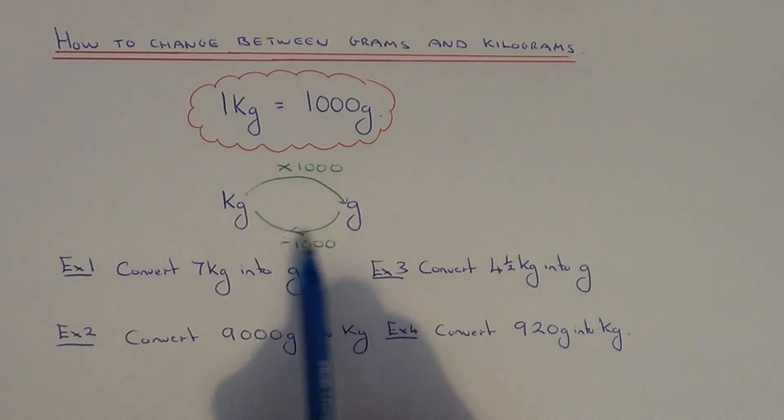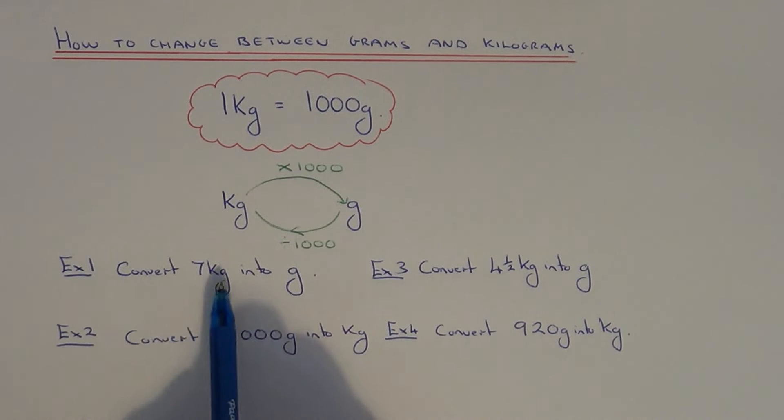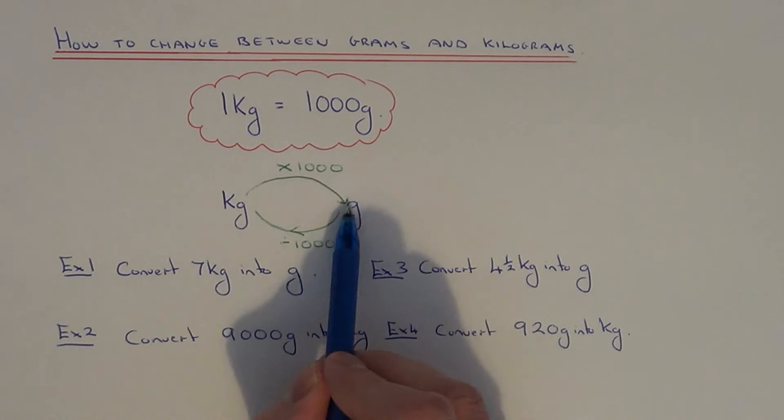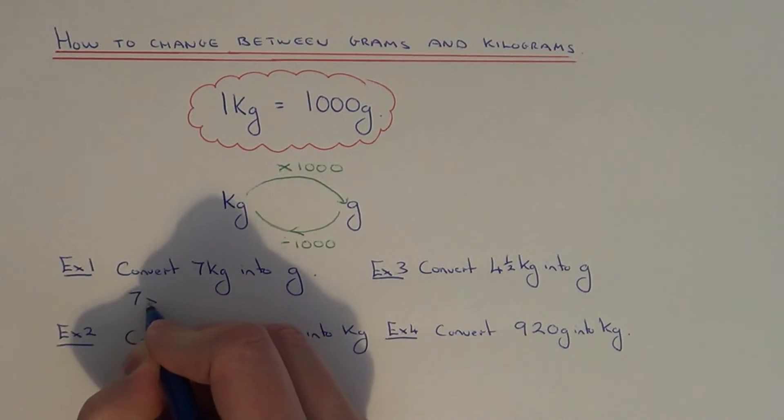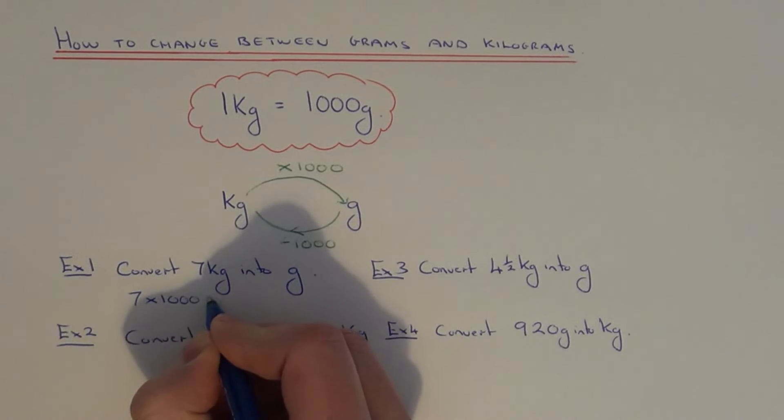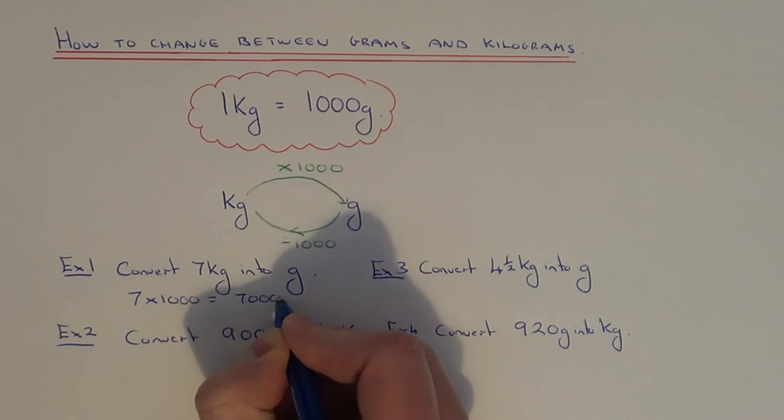So let's apply this diagram to the four examples here. We've got to convert seven kilograms into grams. Kilograms into grams, we just need to remember to multiply by a thousand. So if you do seven times a thousand, that will be seven thousand grams.